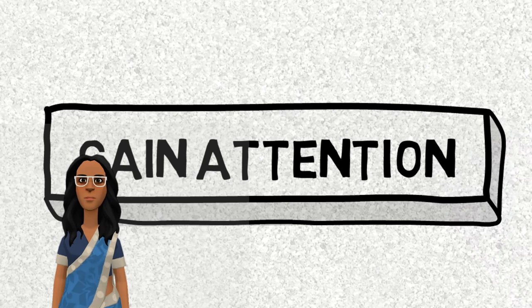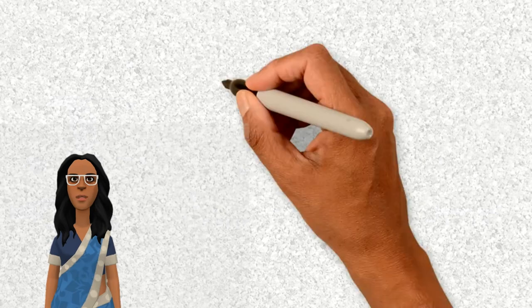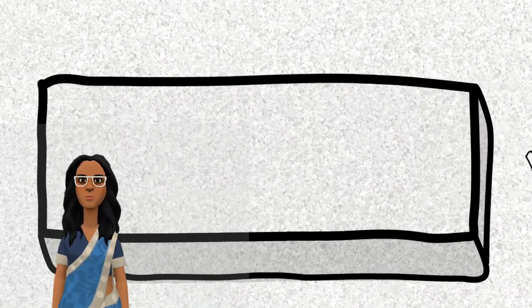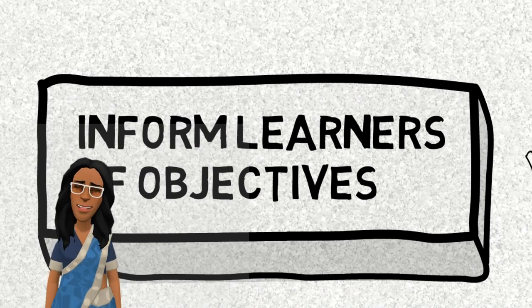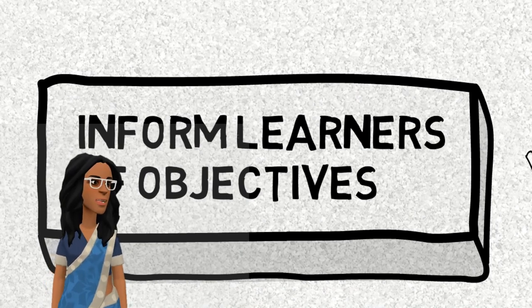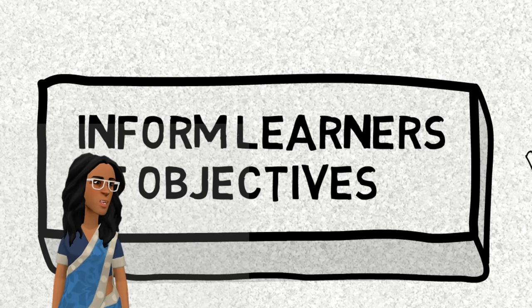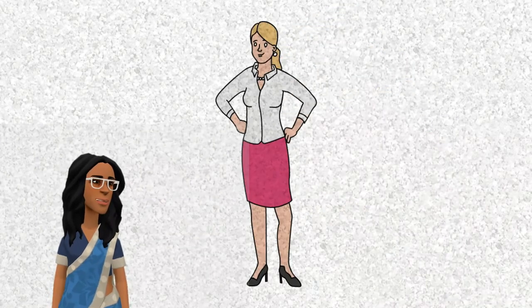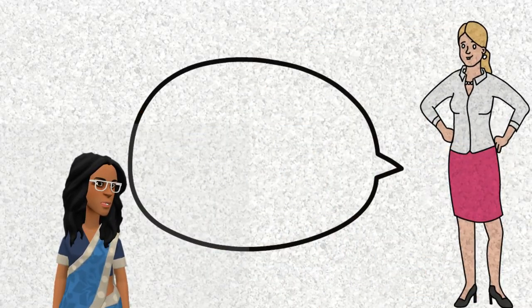The first step is to gain attention — giving the learners a stimulus to begin instruction. This can be done by starting with a story. Step two is to inform the learners of the objectives, telling the learner what they will be able to do as a result of the instruction. This can be a formalized objective or something simple that the audience will understand.